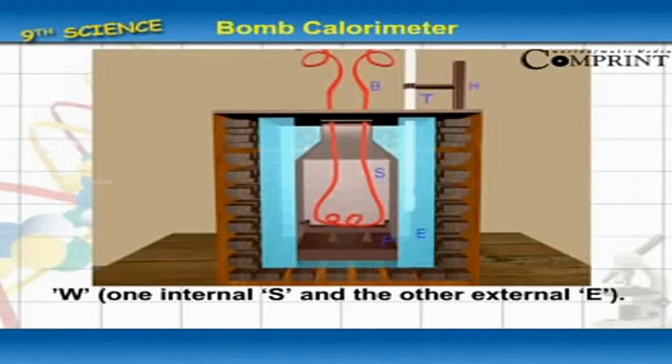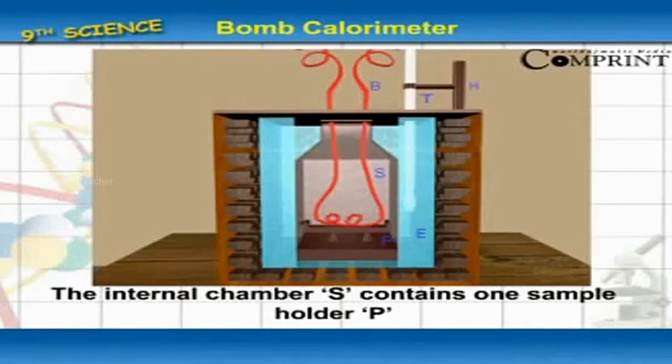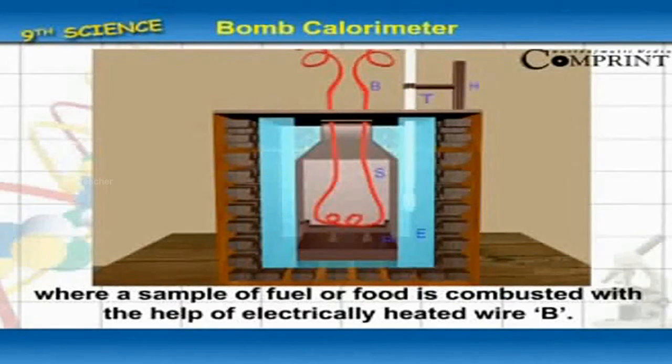One internal S and the other external E. The internal chamber S contains one sample holder P where a sample of fuel or food is combusted with the help of electrically heated wire B.